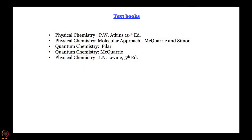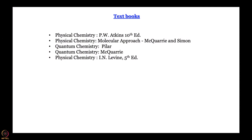Next, let me tell you what the textbooks are going to be. For this course, to start with, we are going to use material from textbooks on physical chemistry by P.W. Atkins and that by McQuarrie and Simon. Later on, as we go a little deeper, we are going to use quantum chemistry by Piller and quantum chemistry by McQuarrie. Occasionally one might refer to physical chemistry by Ira Levine; if we refer to any other book I will give the specific reference.